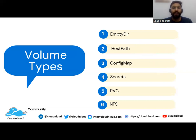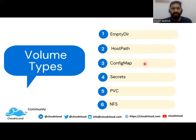Next we have ConfigMap. A ConfigMap volume is used to store configuration data as key-value pairs. This type of volume can be used to inject configuration data into a container, or to configure Kubernetes objects such as a pod.